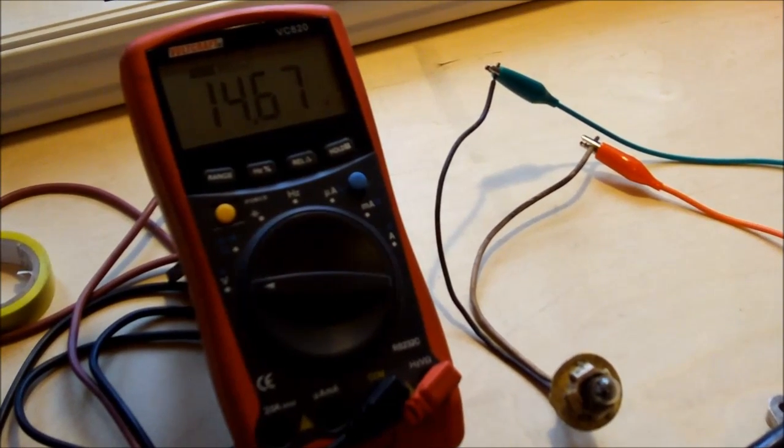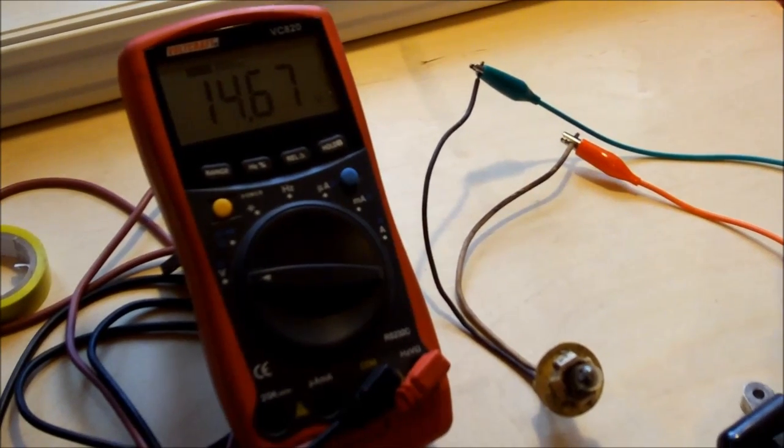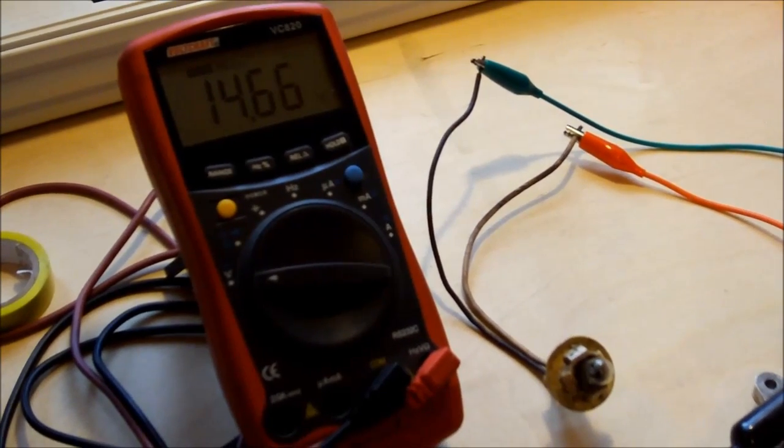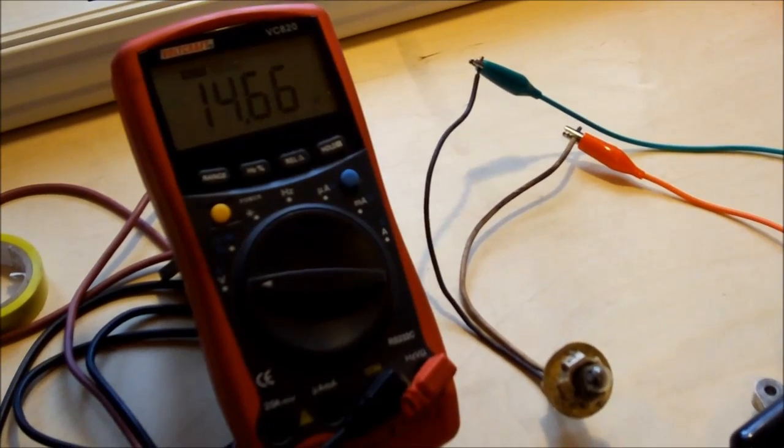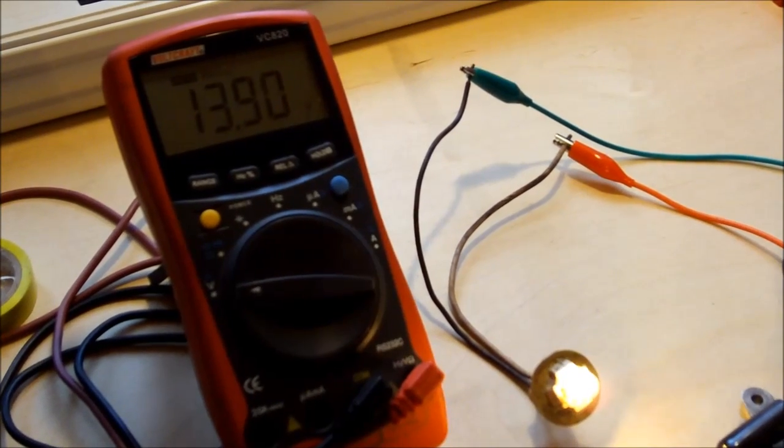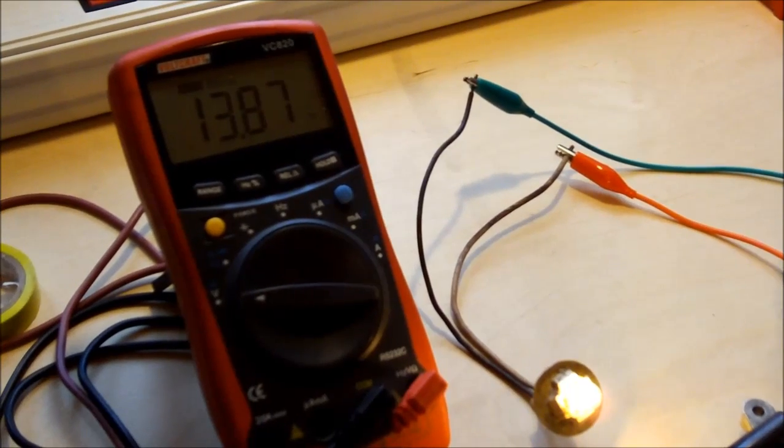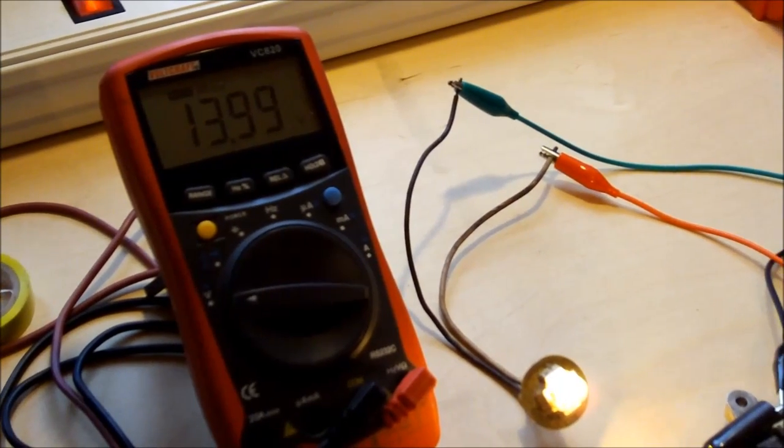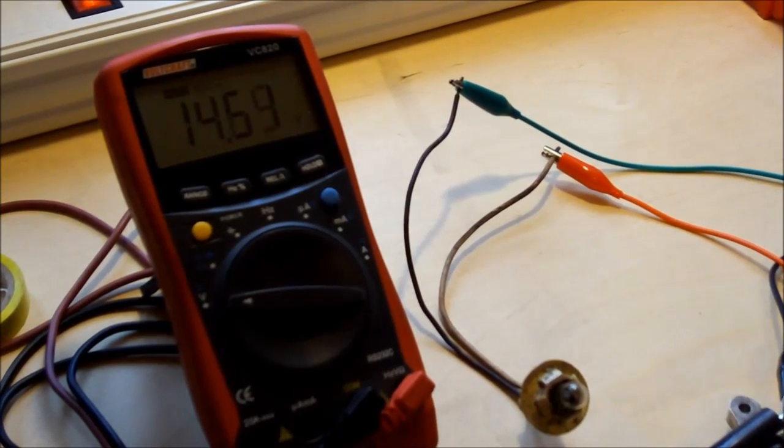You can see when I increase the voltage to 14.6 volts, the regulator cuts off the field voltage. I'm going to decrease it again. 13.8 volts on, 14.5 volts off.